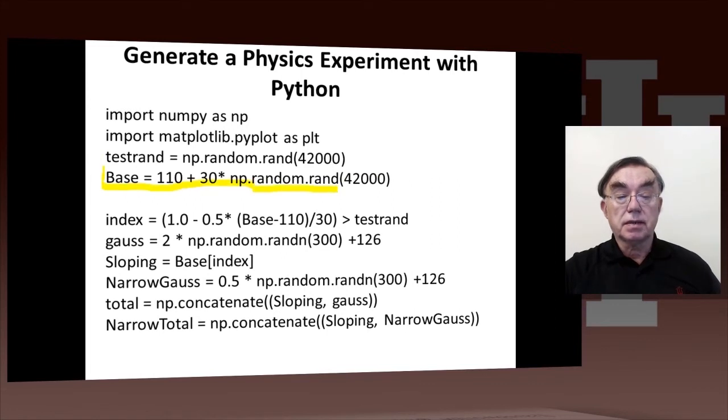This command here, base equals 110 plus 30, times a random number generator, and that's executed 42,000 times. This is generating events between 110 and 140 GeV. That's because the random number generator is between 0 and 1, so 110 plus 30 times that random number lies between 110 and 140 uniformly.